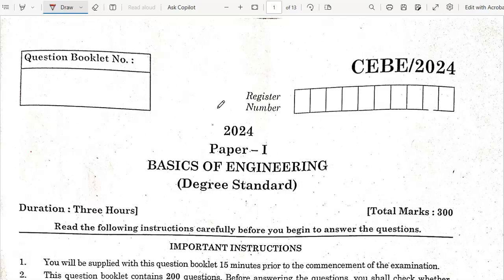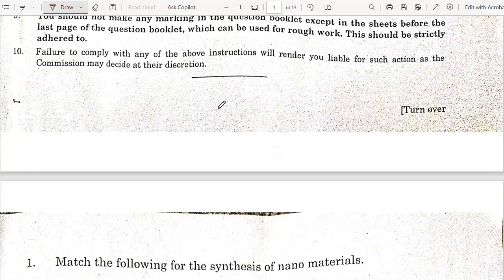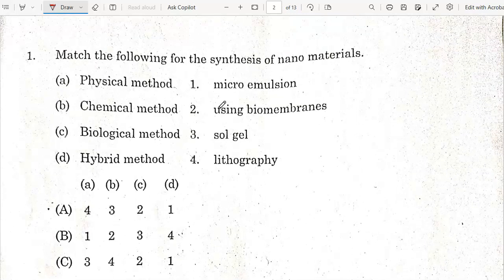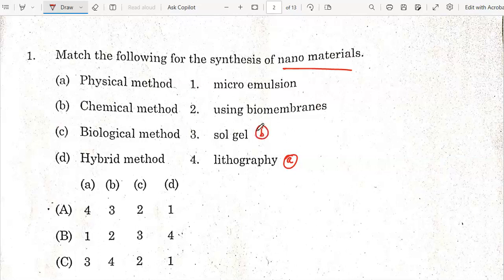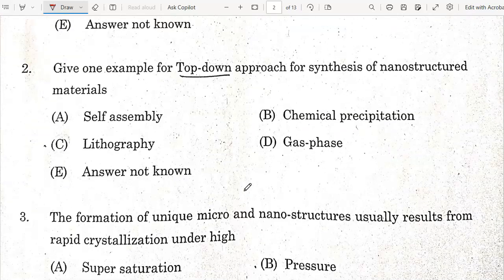First question: Match the following for the synthesis of nanomaterials. Physical method uses lithography, chemical method uses sol-gel, biological method uses biomembranes, and hybrid method uses microemulsion. So option 4-3-2-1 is the correct answer.